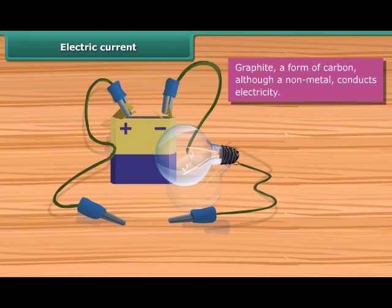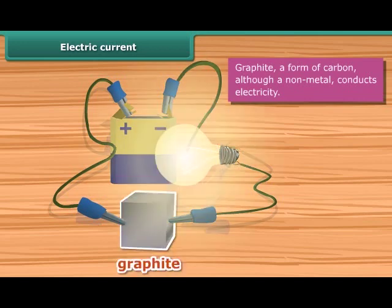Bring the free ends of the two wires close. Now let them touch each other. If the bulb glows, the material is electrically conducting; otherwise, it is an insulator.